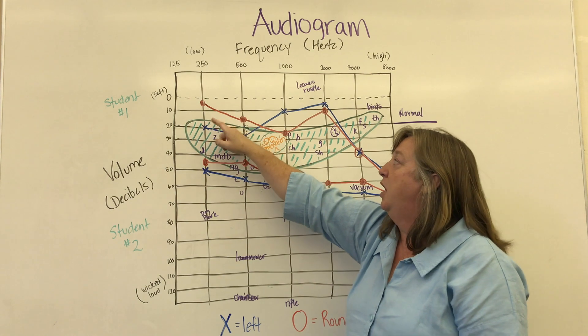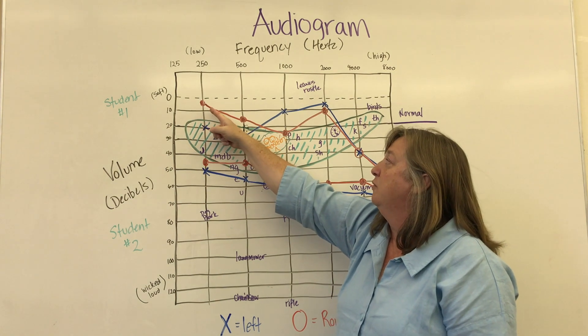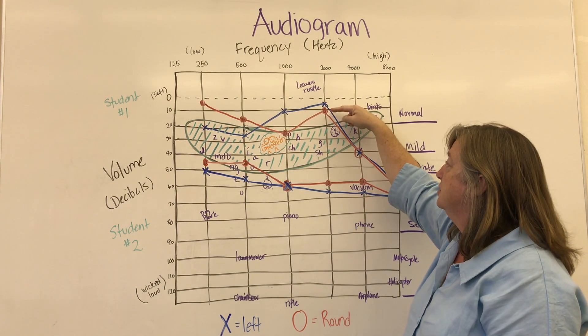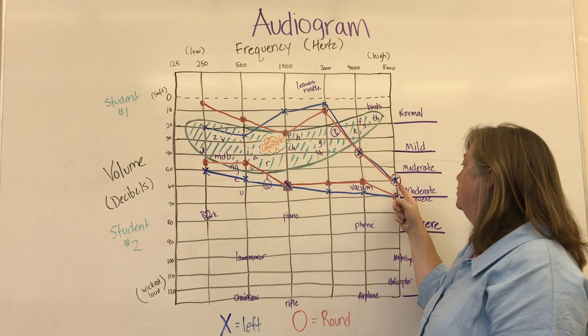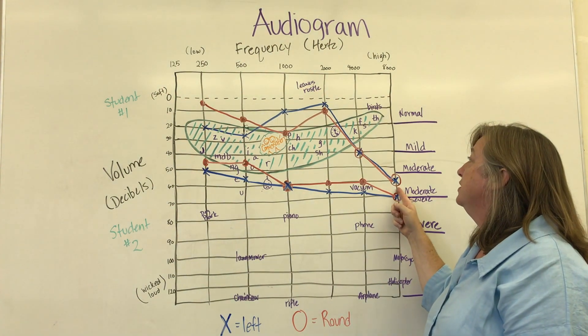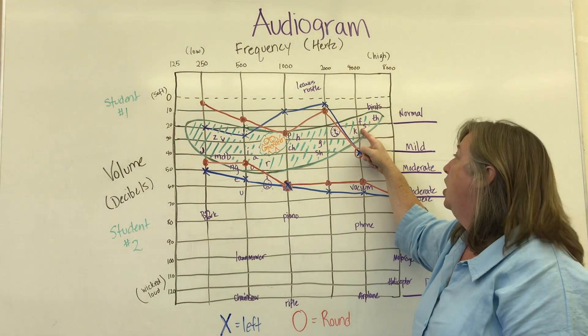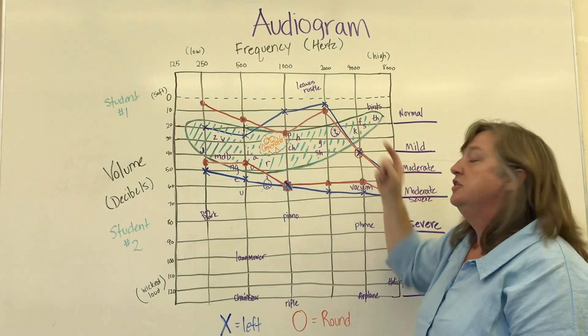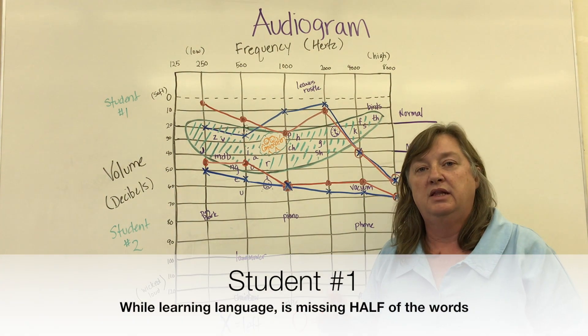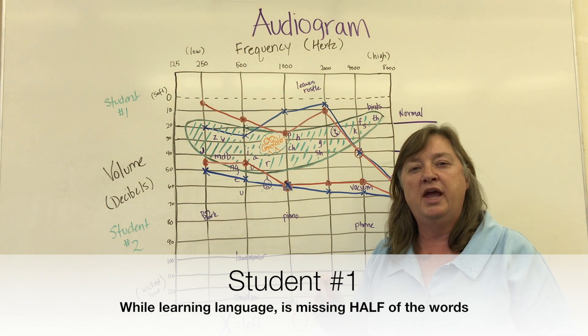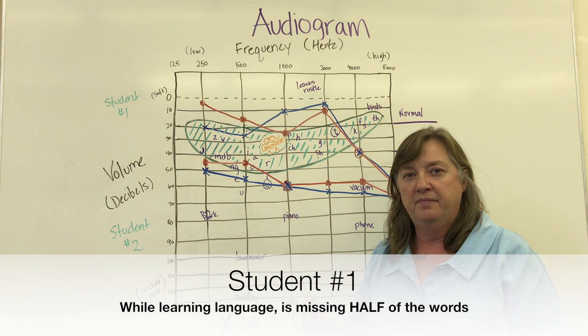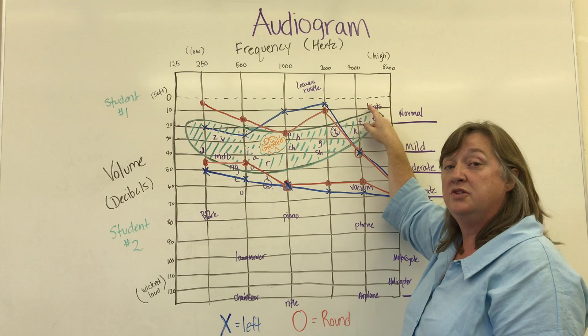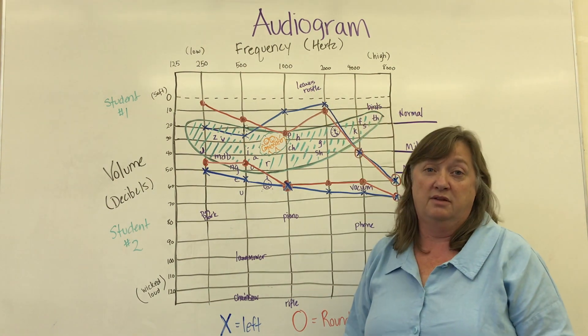So in the case of student number one, in her right ear, she has pretty normal hearing all the way up to 2,000 hertz and then slides down to a moderately severe loss by 8,000. So the sounds that she does not hear are K, TH, S, and TH. So for somebody who is listening to language and learning vocabulary and learning language for the first time, they are not hearing K, F, S, and TH. She's also not hearing birds chirp and she doesn't know that leaves rustle and make a sound.